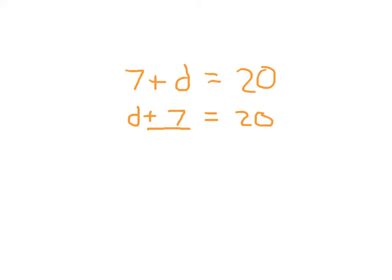Because we want to only have our variable on that left-hand side. So what we do is we do the opposite of plus 7, which is to subtract 7 from each side of the equation. 7 minus 7 is 0.